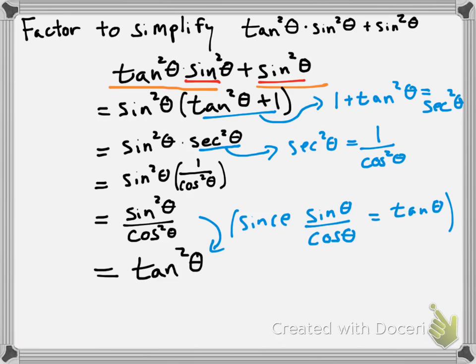So these are just a couple of examples to help you out with the homework. This second example is a little bit more complicated than most of the questions you're going to get in the homework, but at least you've seen an example of going through the process. You're going to do your best to recognize parts of an expression from any of our trigonometric identities, and you'll be substituting in other expressions. I hope this helps with the homework, guys. I'll see you tomorrow.